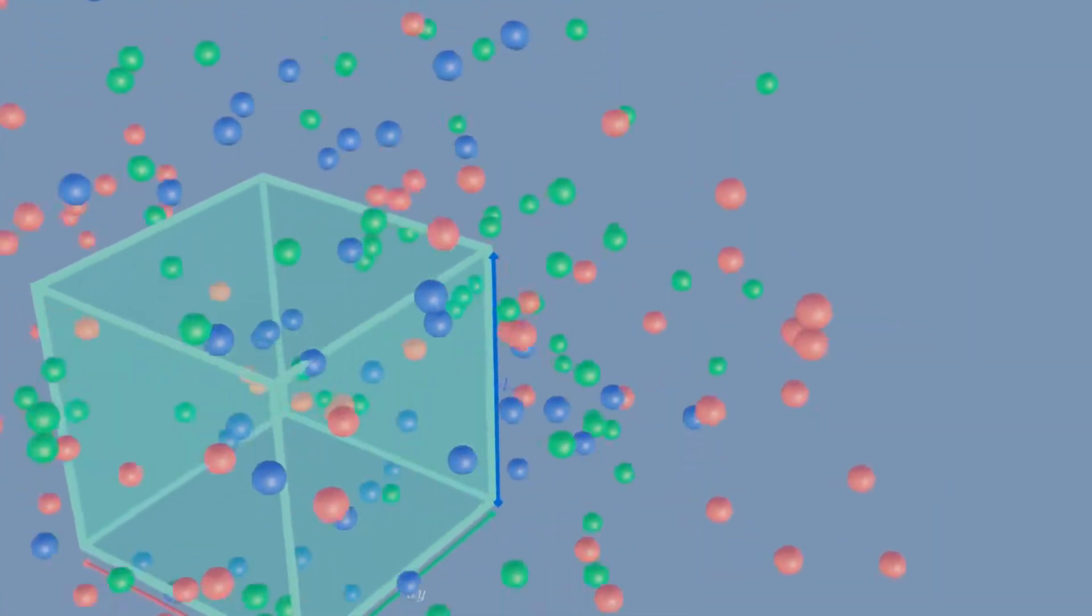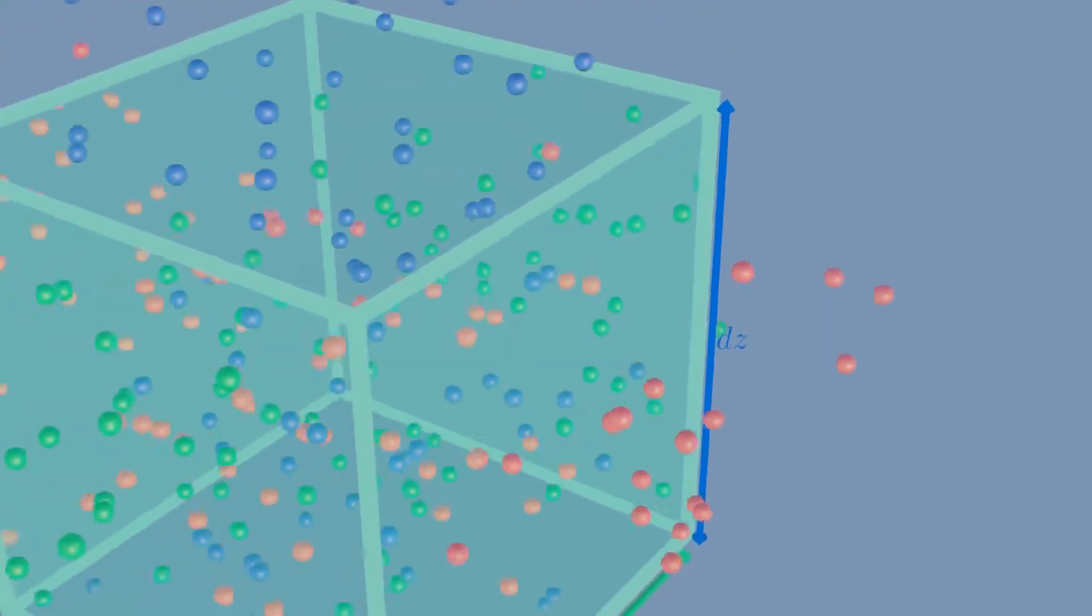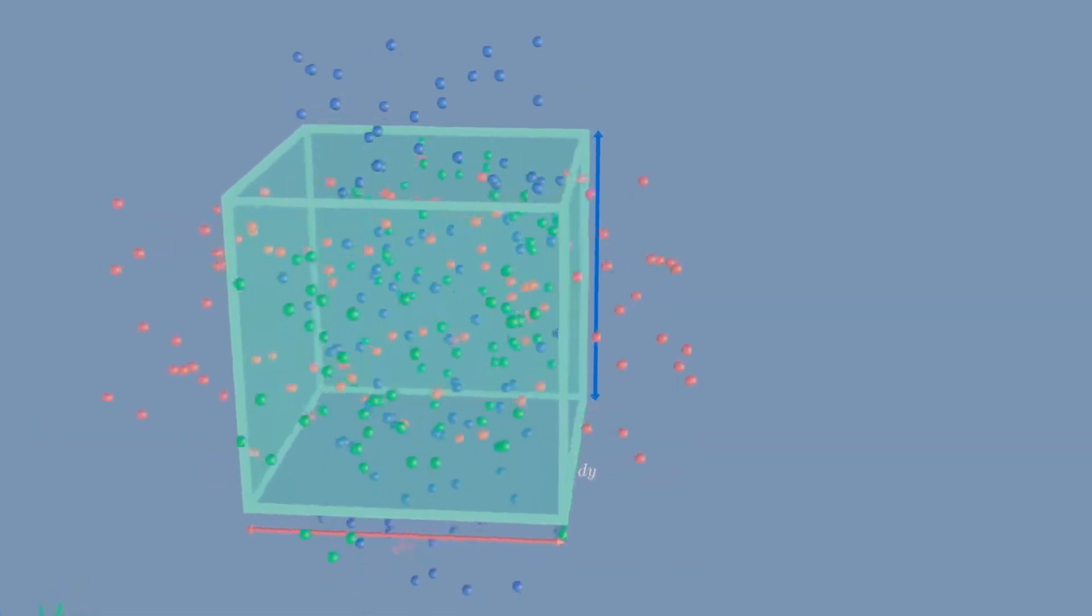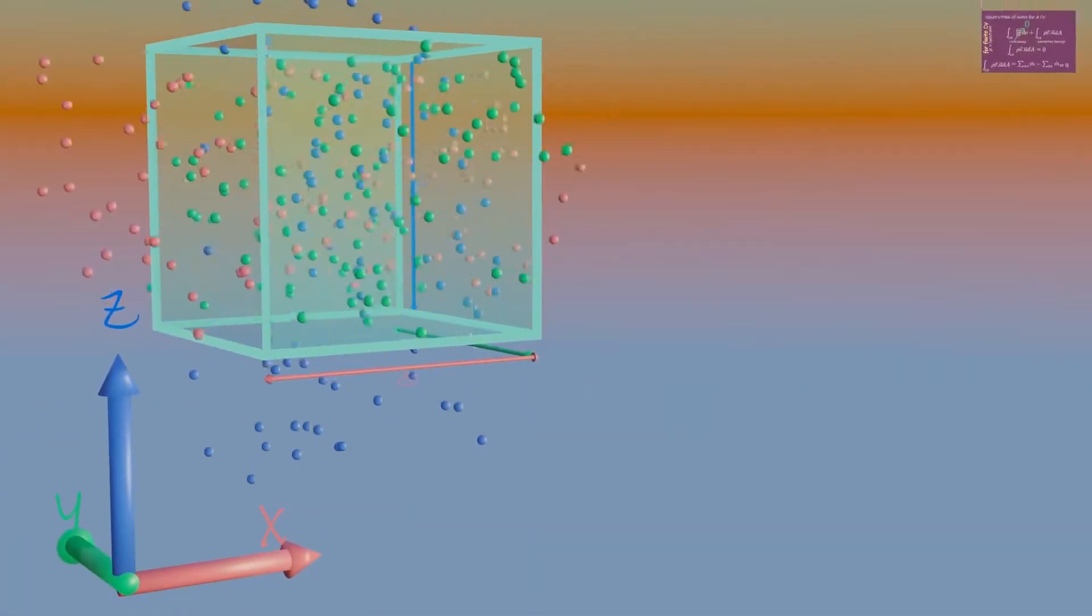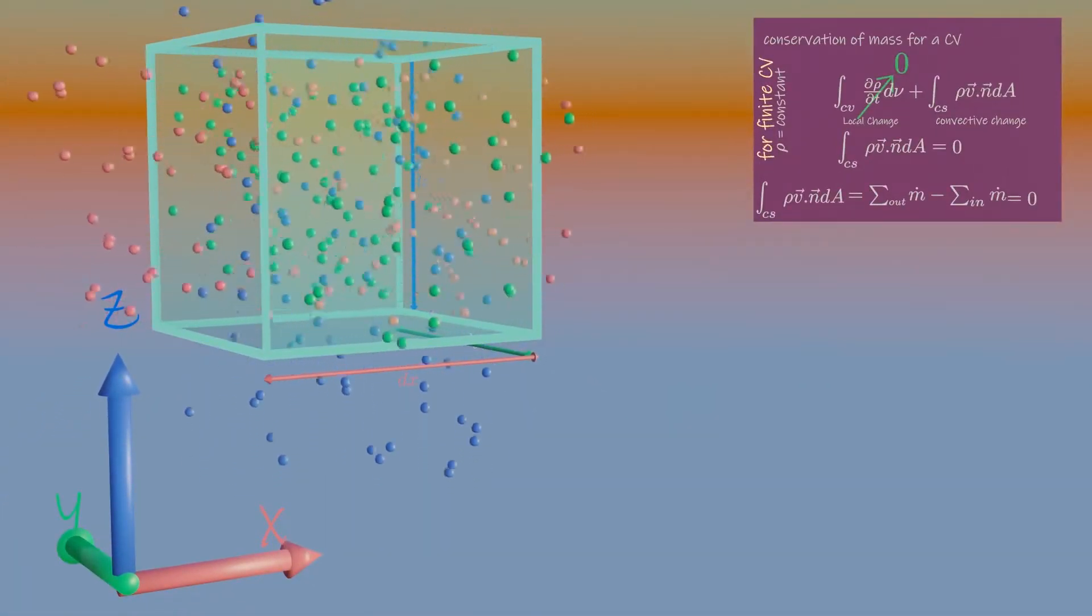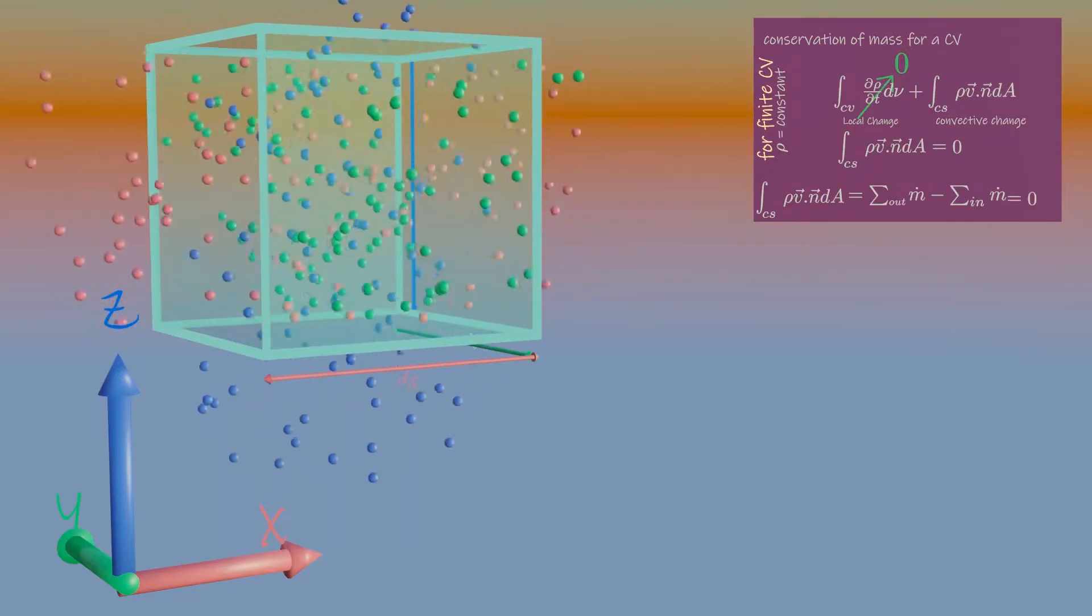For easiness and calculation purpose, I will zoom this shrinked control volume. Just note that this differential control volume is zoomed. It is not finite now. It has differential size.